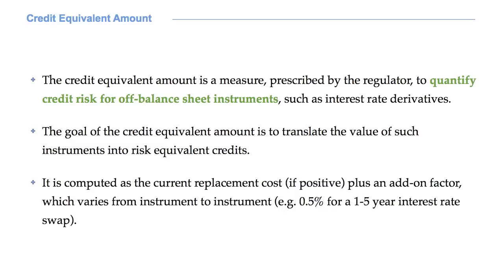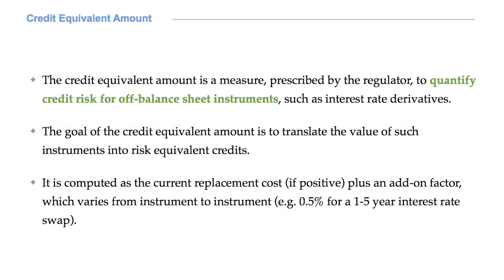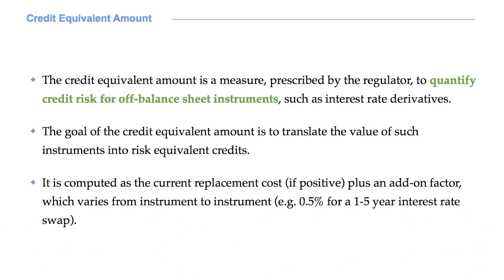The credit equivalent amount is a measure used to quantify credit risk for off-balance sheet instruments such as interest rate derivatives. It is once again prescribed by the regulator. What is an off-balance sheet item? It is simply an asset or debt that does not appear on a company's balance sheet. Usually, it is an item in which the company does not have legal claim. If you are a bank, a loan is clearly an item you keep on your book. However, if this loan is securitized and sold off as an investment, essentially what happens in CDOs, the securitized debt is no longer kept on your book, thus becoming off-balance.